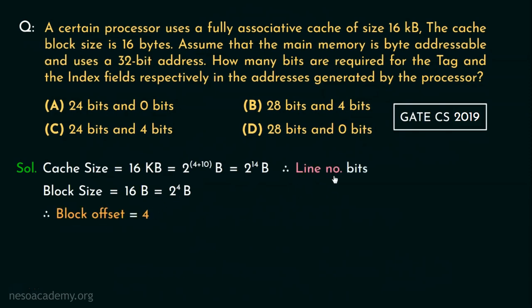Therefore for line number, log₂(2^(14-4)) bits will be needed. Why is this? Because the cache size in terms of bytes is 2^14 and block size is 2^4. Therefore in order to calculate the number of lines in the cache we need to divide the cache size by the block size which is 2^(14-4).